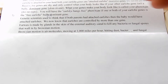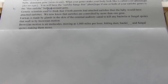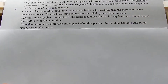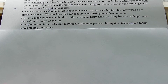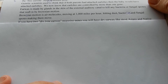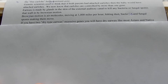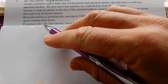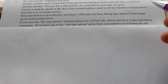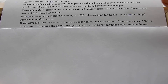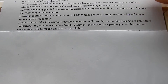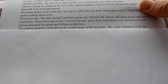Brownian motion is air molecules moving at a thousand miles per hour — that's what they do, hitting dust and bacteria. Molecules are very small, so a thousand miles per hour hitting you in the side of the head is just a bit of air pressure. Fungal spores and bacteria just float around in the air. If you have two dry-type ear wax recessive genes, you will have dry ear wax, like most Asians and Native Americans. If you have one or two wet-type ear wax genes from your parents, you will have wet ear wax, like most Europeans and African people. Wet is dominant.